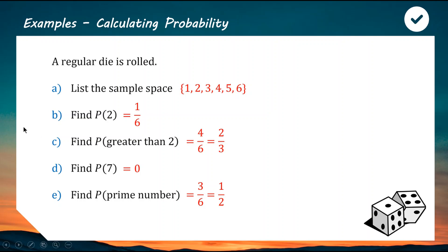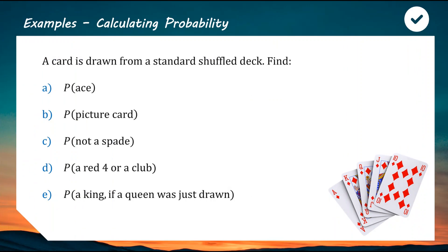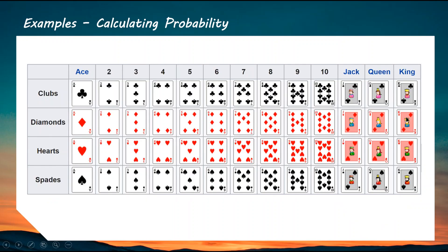Moving on to something a bit more tricky — this question involves knowledge of a standard deck of cards. We're going to find the probability of five events. To be good at these questions you need to be familiar with a standard deck of cards. Some students play cards at home with family or friends, but for others this setup can be a bit confusing.